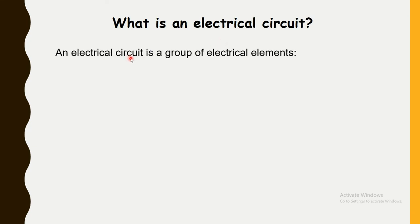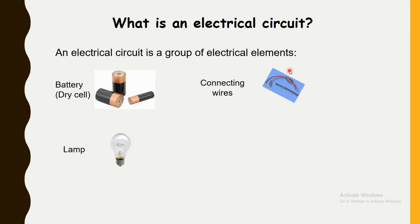An electrical circuit is a group of electrical elements, such as battery or dry cell, lamp, and connecting wires used to connect electrical elements. For example, I connect a lamp to a battery by a connecting wire.